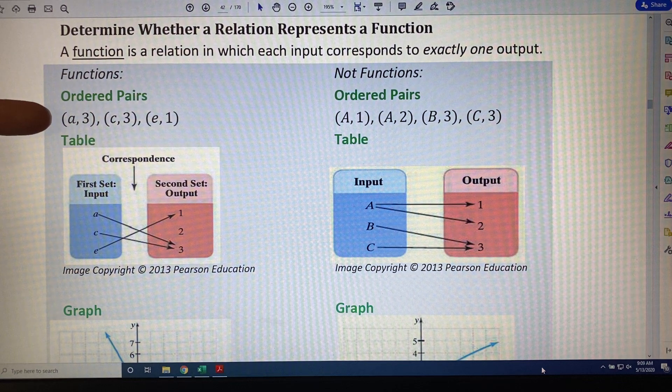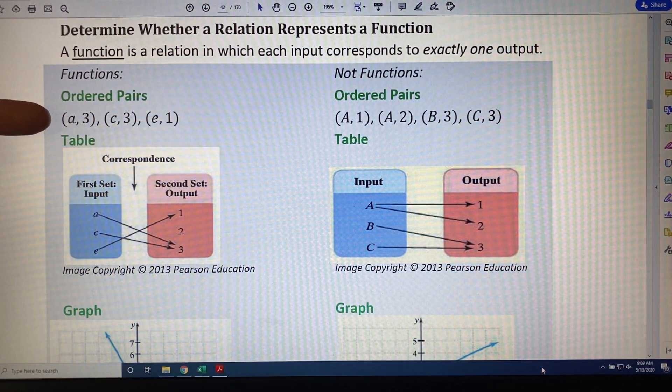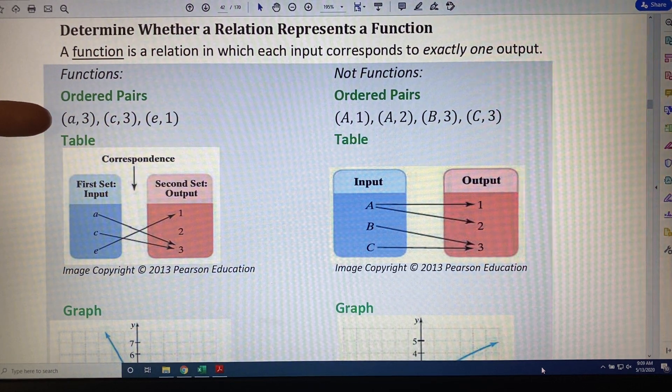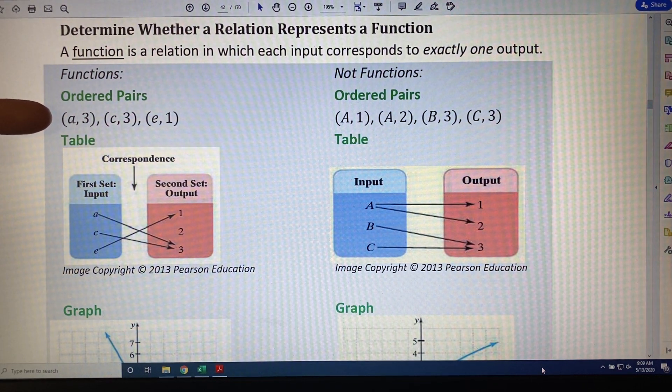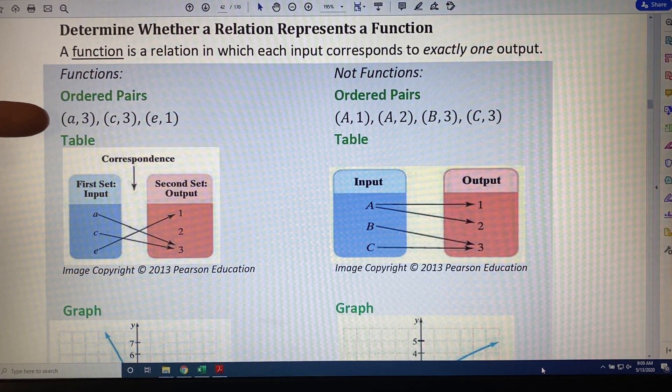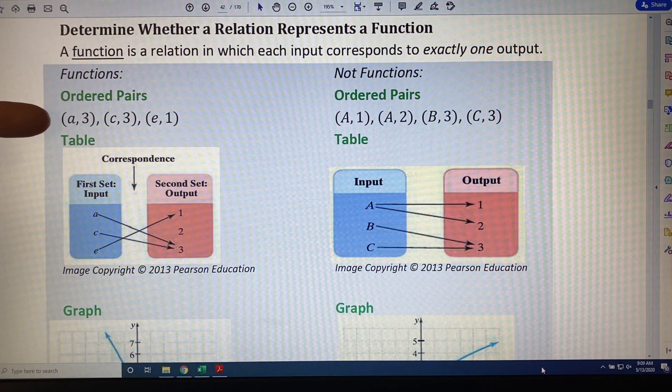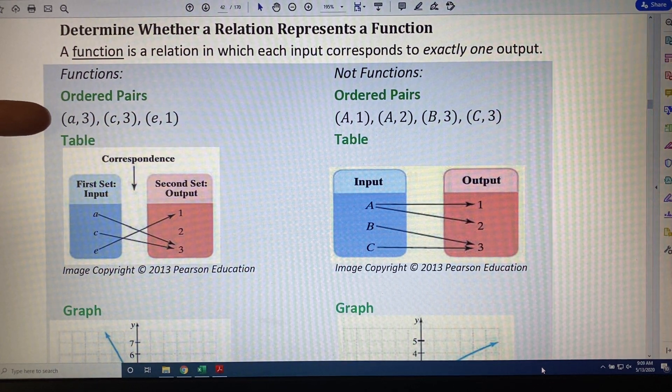a leads to 3, c leads to 3, e leads to 1. This is a function because for each input there is exactly one output. a leads to 3, and nowhere else. c also leads to 3, and nowhere else. e leads to 1, and nowhere else. This is a function.